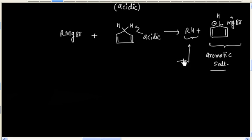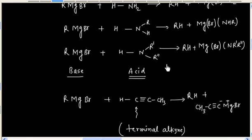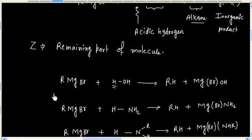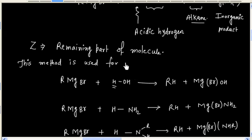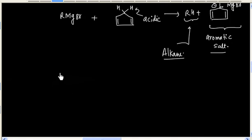One product is alkane and we will also have a side product. So basically this method is used for preparation of alkane — that is, reacting Grignard reagent with a compound that has acidic hydrogen. So we can say this method is used for preparation of alkane. This is about reactions of Grignard reagent acting as a base.